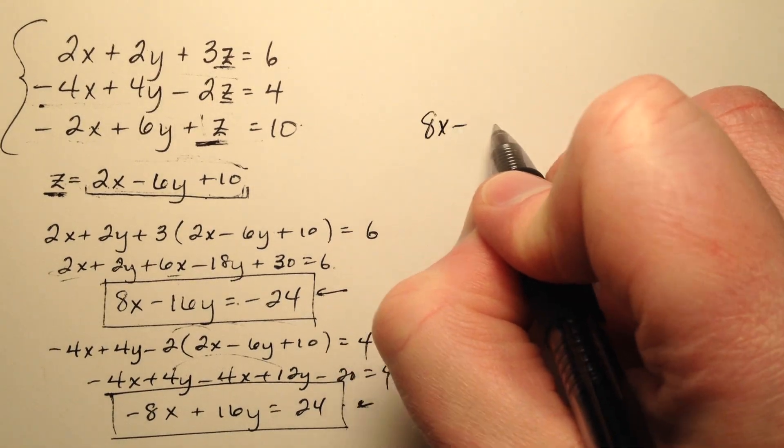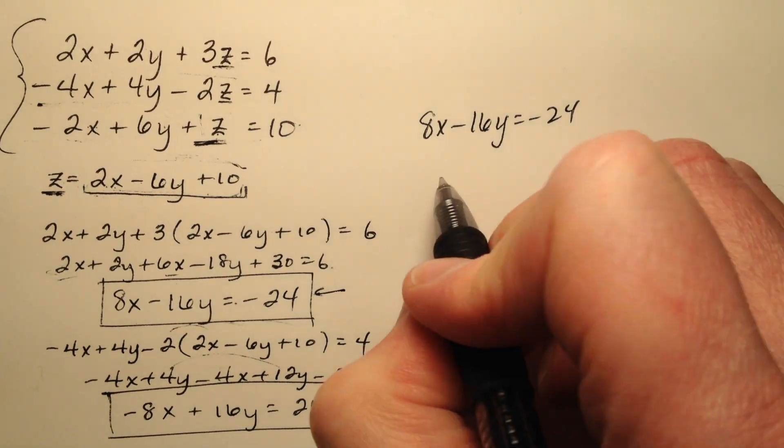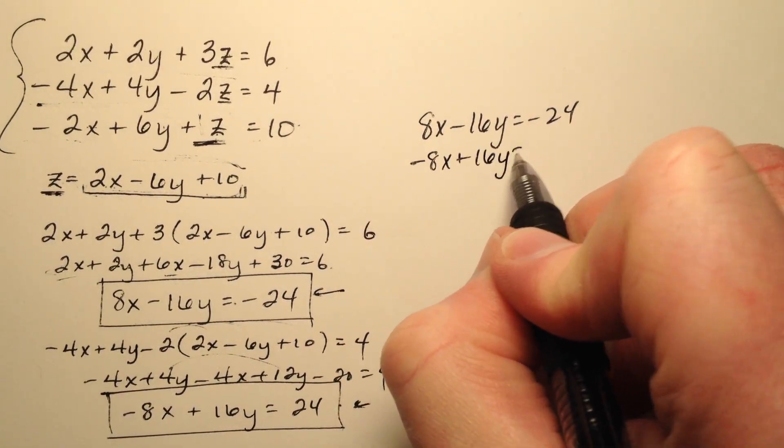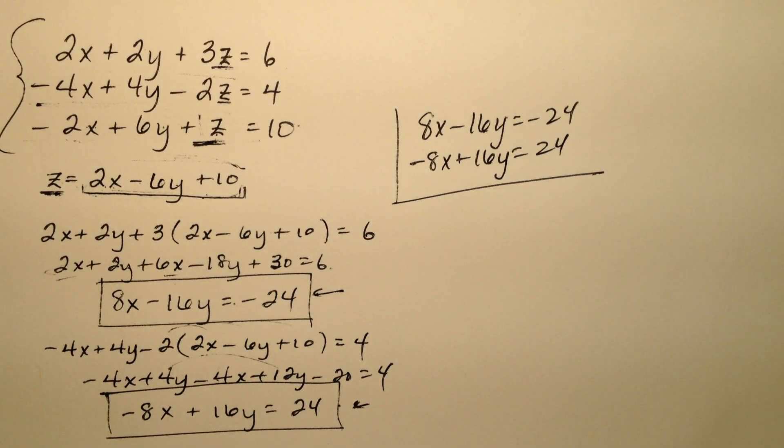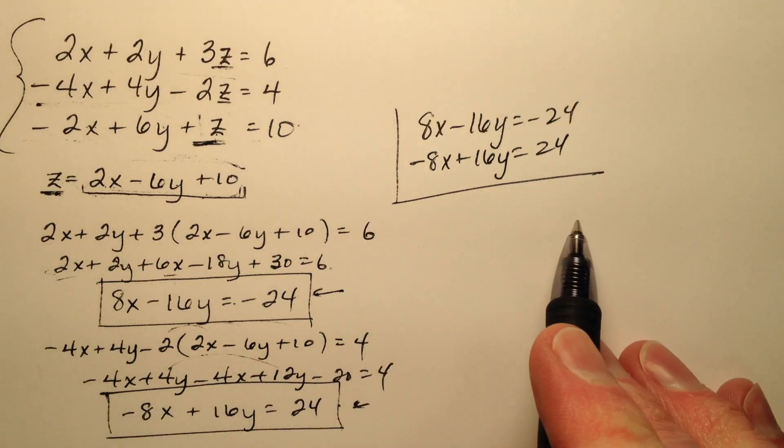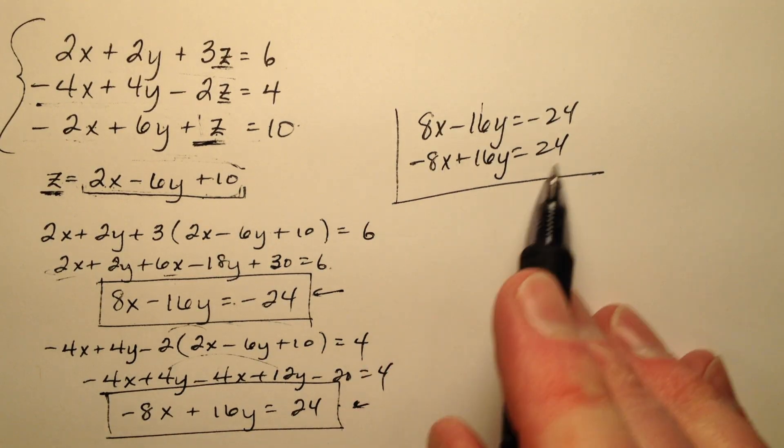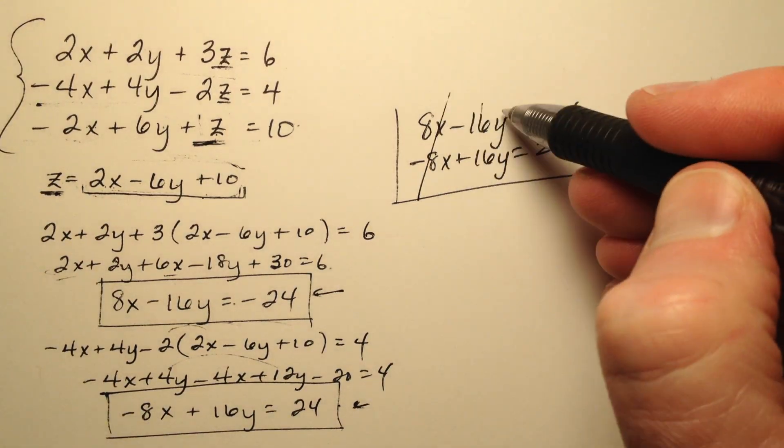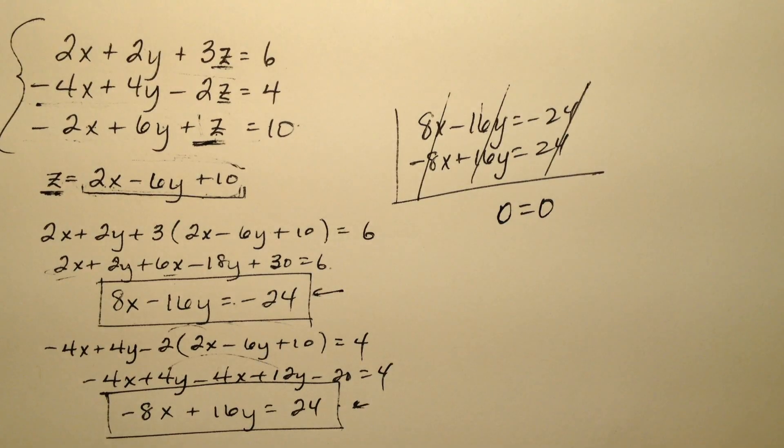So 8x minus 16y equals negative 24, and negative 8x plus 16y equals positive 24. Well, a very interesting thing has occurred here. It looks like when I add these two equations, everything cancels out. So I have 0 equals 0.